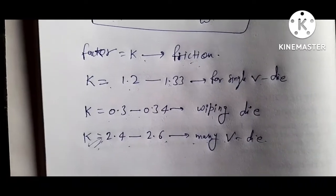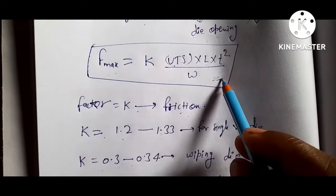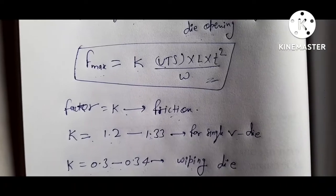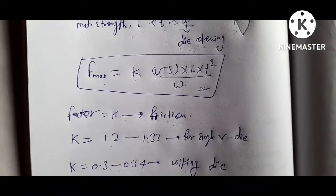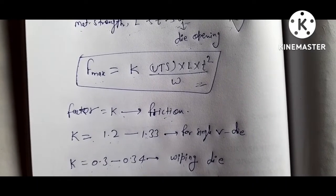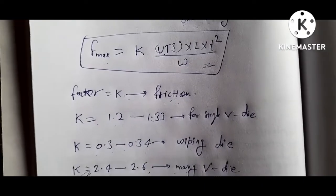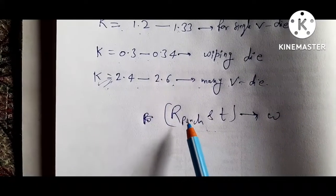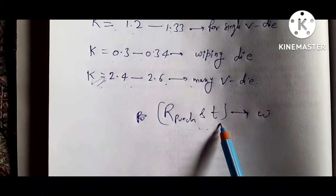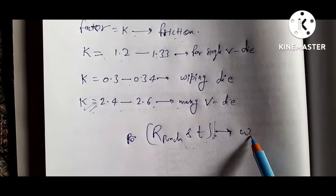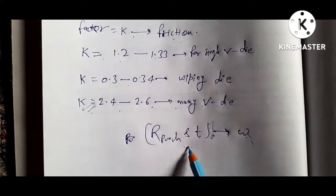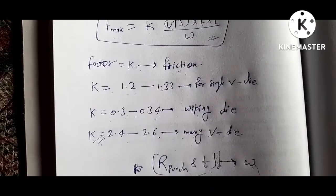This formula is best applied for the situation in which the punch radius and the sheet thickness are small compared with the size of the die opening W. That means if punch radius and sheet thickness is smaller as compared to die opening width, then it is best to use this formula.